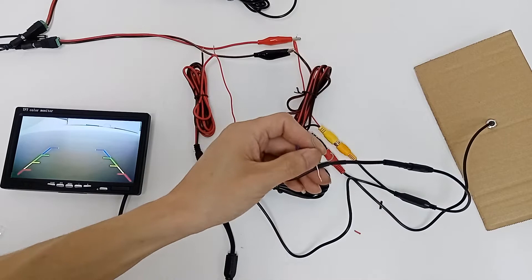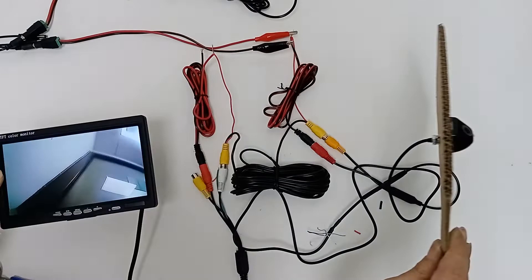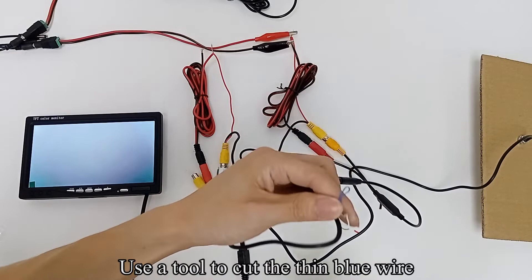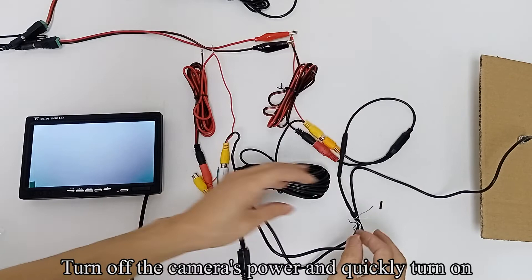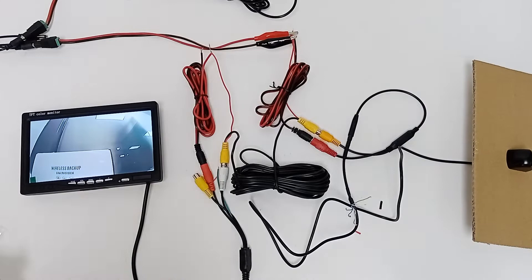Use a tool to cut the thin green wire. Turn off the camera's power and quickly turn it on. The image automatically switches to vertical normal mode. Turn off the camera's power and quickly turn it on again to confirm the vertical normal mode.